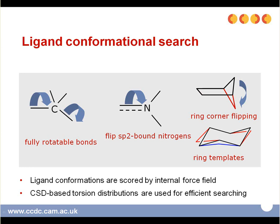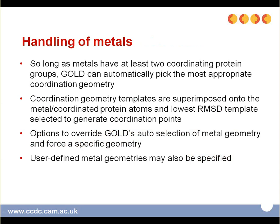By applying this correction, the internal energy is calculated with respect to that of a close-to-optimal non-bound structure, thereby taking into account any irreducible internal energy. Finally, torsion angle distributions extracted from the Cambridge Structural Database are utilized by GOLD. These distributions are used to restrict the ligand conformational space sampled by the genetic algorithm.